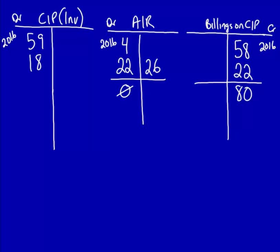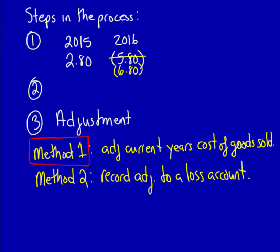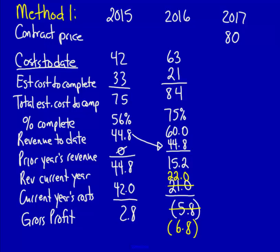Now that we have recorded these entries, we're standing at the end of 2017 and can complete our chart. The costs to date are $81. Remember that we have to use the cost to date — don't be tempted to use only the current year's cost because your calculations will not work. This $81 is less than the $84 expected in 2015, as costs are a moving target with many variables that can cause them to increase or decrease. We managed to complete the contract for a total of $81.